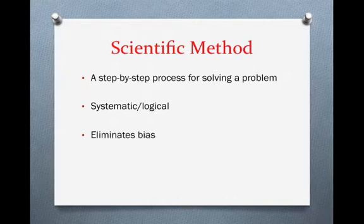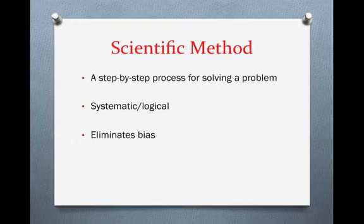The scientific method also helps to eliminate bias. Bias is when your own personal opinions or expectations about the outcome cause you to make mistakes that move your results in the direction you expected. Those results won't necessarily reflect the real world, so any type of bias is going to give you bad results. Being careful with your scientific method means those opportunities for bias are going to disappear.